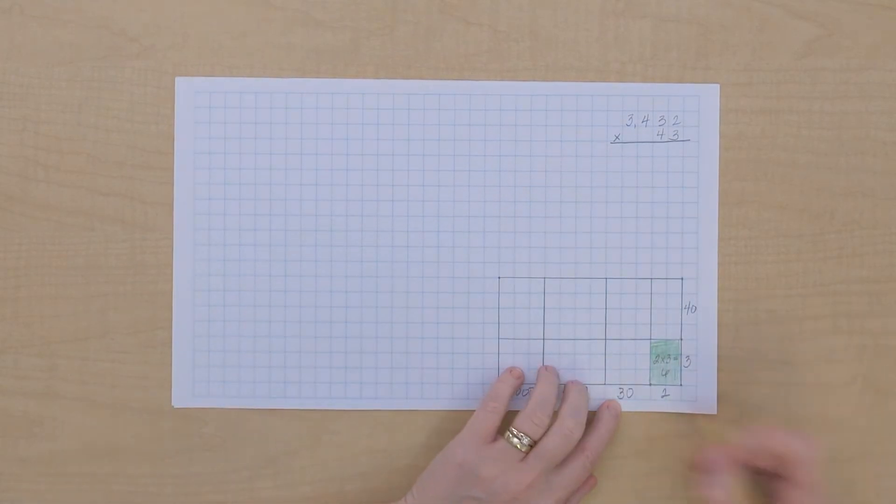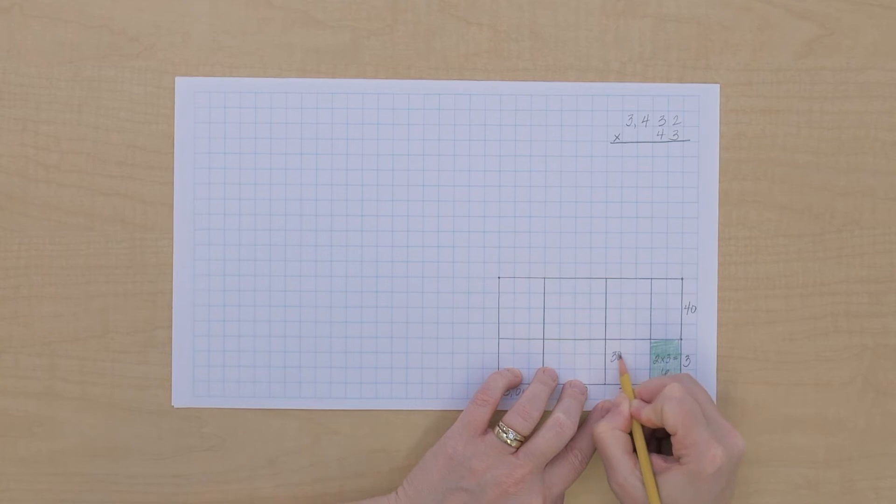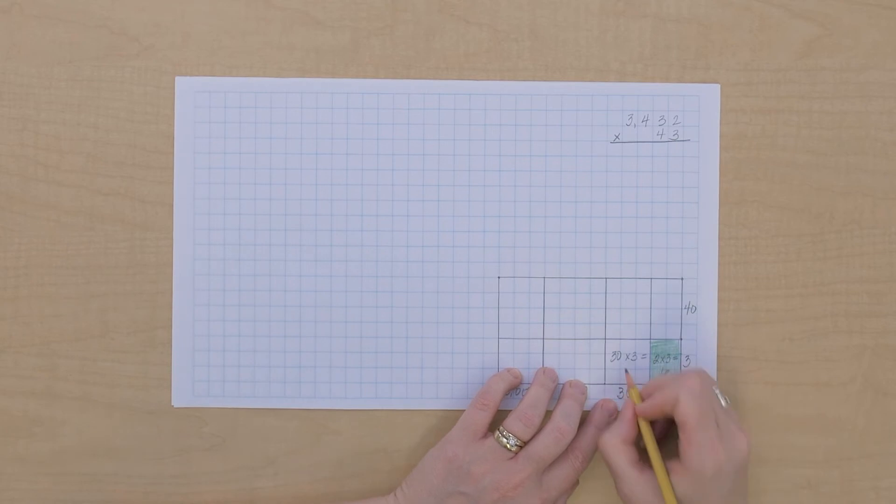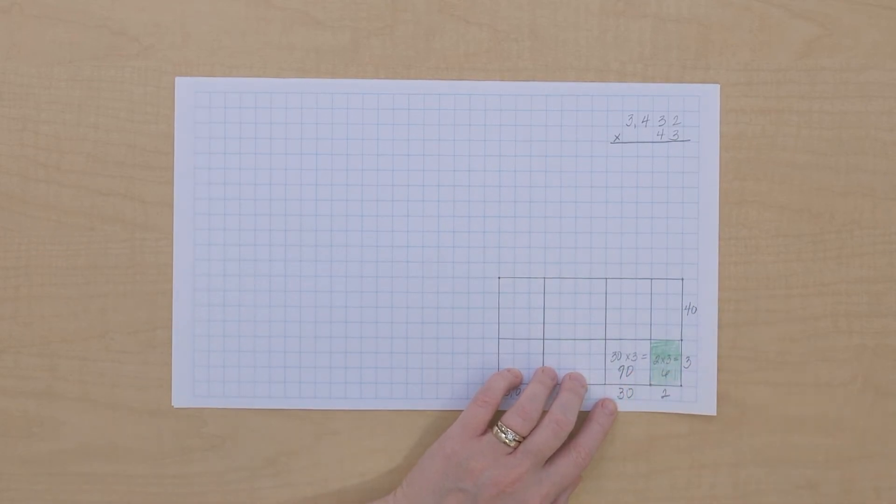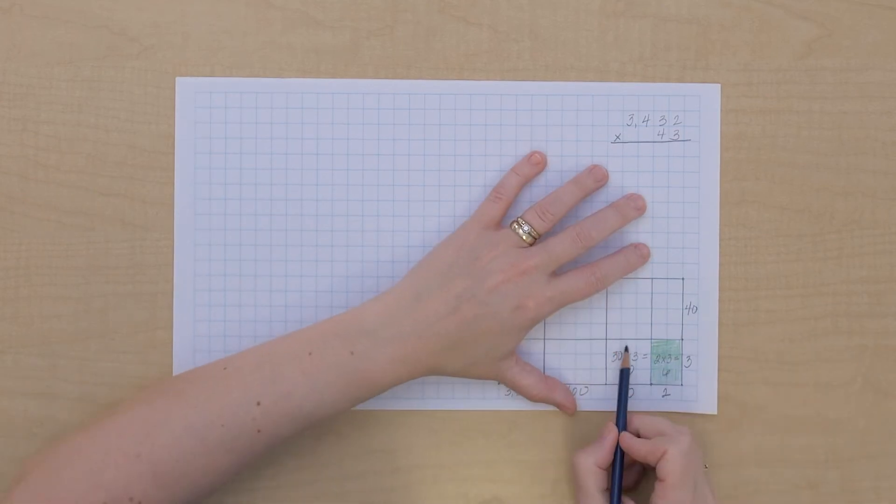Now we have this multiplication, 30 times 3. Tens times units gives us tens, so that's 30 times 3, that's going to be 90. That's a tens multiplication, let's color this one in blue.